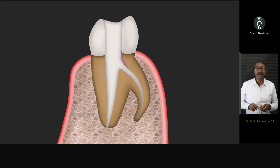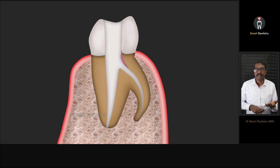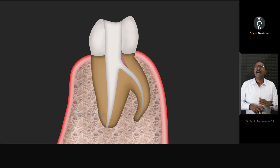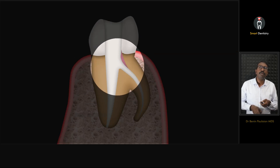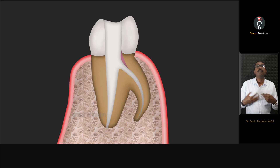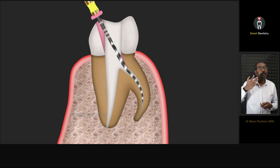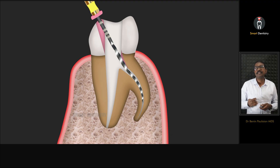Before using any rotary files, take an orifice enlargement file — for example, SX in the ProTaper system, or an 8% taper size 25 tip in a constant-taper cleaning and shaping system — and enlarge the orifice. When you use an orifice opener, it removes dentine from the highlighted area, allowing you to minimize or avoid curvature formation in the coronal or rigid aspect of the file, so the file can be quite straightforward at least in the coronal path.